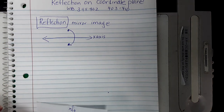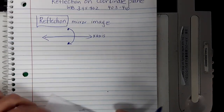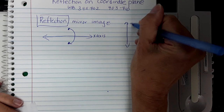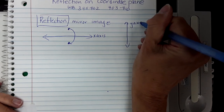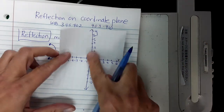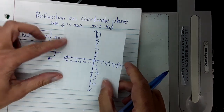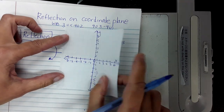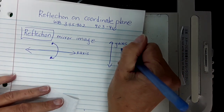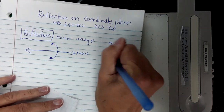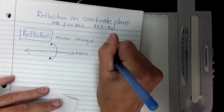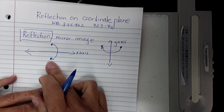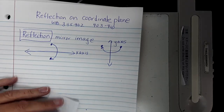The same thing is going to be true if I'm reflecting over the y-axis. So here's the y-axis. When I'm reflecting over the y-axis, if I had a point out here I'm folding it this way. So if I had a point over here, when I fold it, it goes over here. And that's what we're going to be talking about — how do I figure out what those points are?